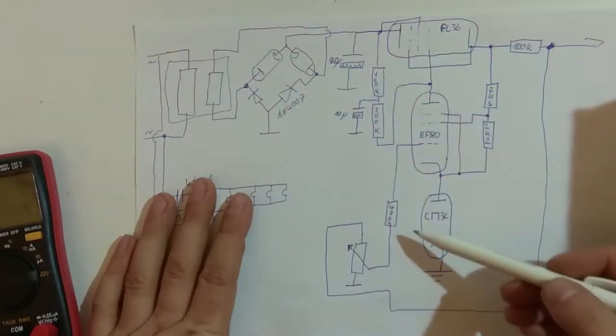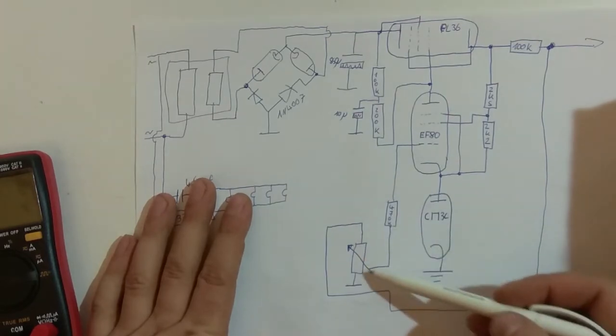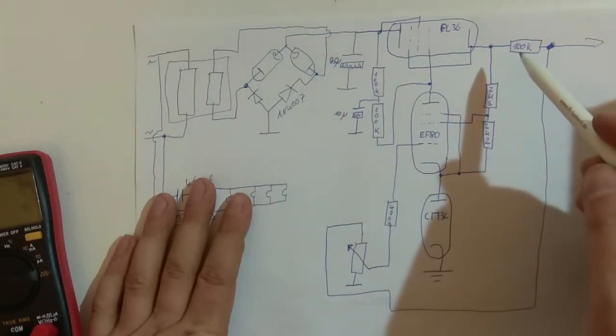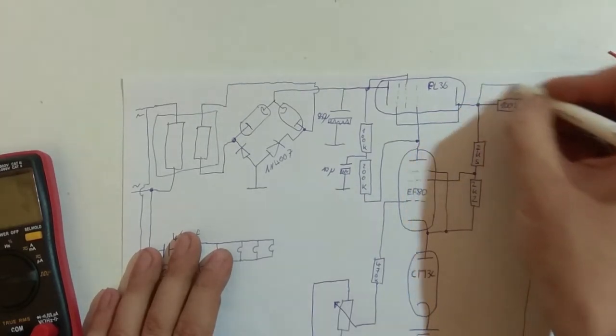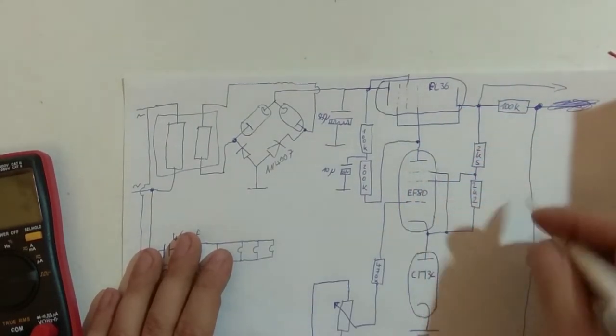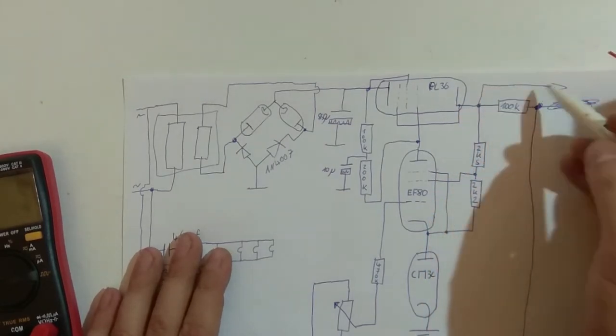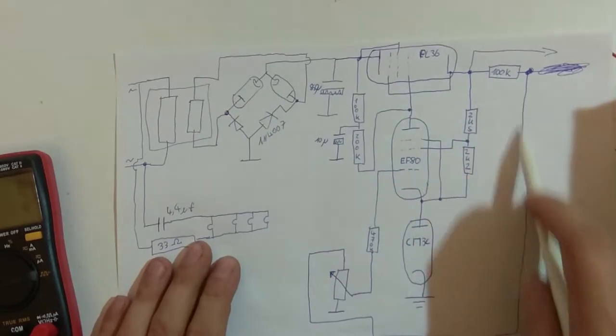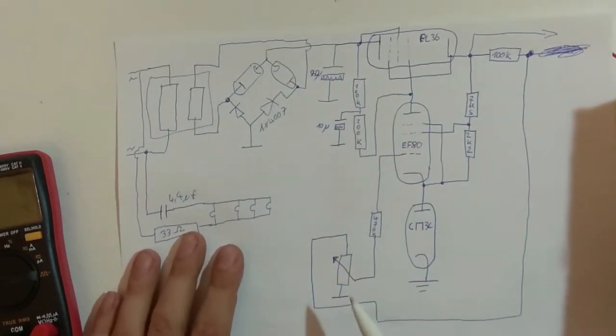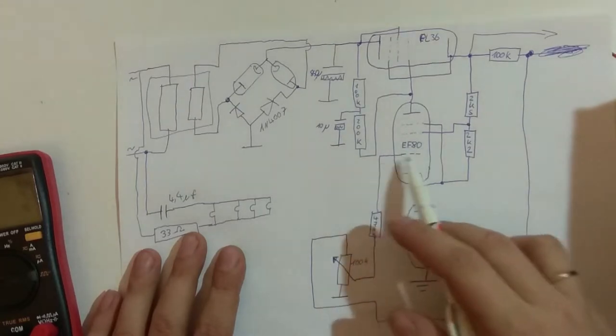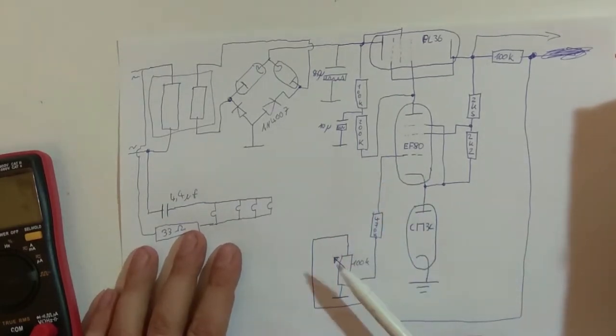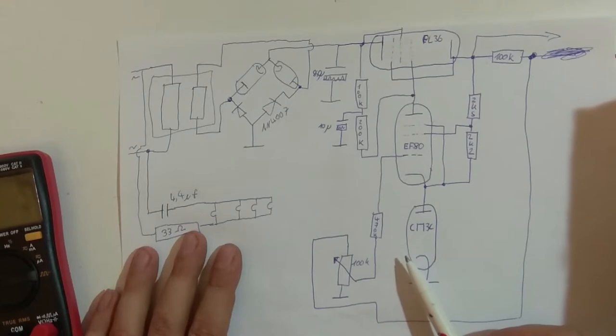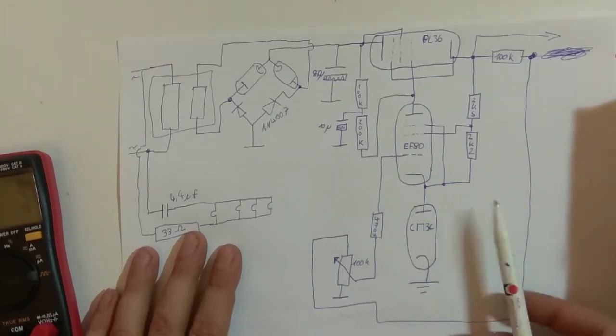Which in turn supplies the screen grid here. We've got all our suppressor grids tied to the cathode internally in this case. Schematic actually says EF-80 - maybe I just put that other tube in to test it and it still worked. Then this is basically an error amplifier supplying the grid of this tube. We've got the screen grid of this actually supplied through - oh, this is actually wrong. This should go to the supply.